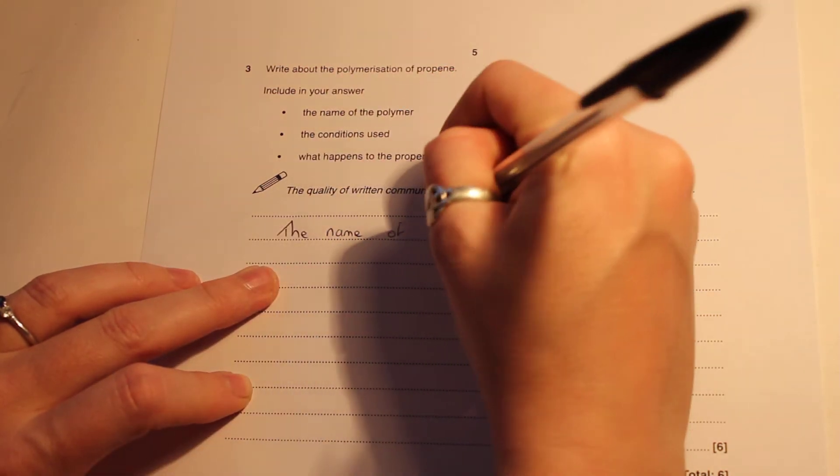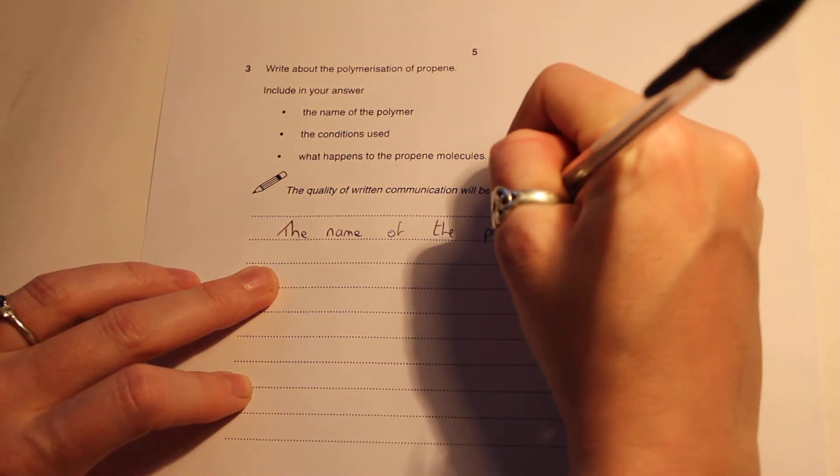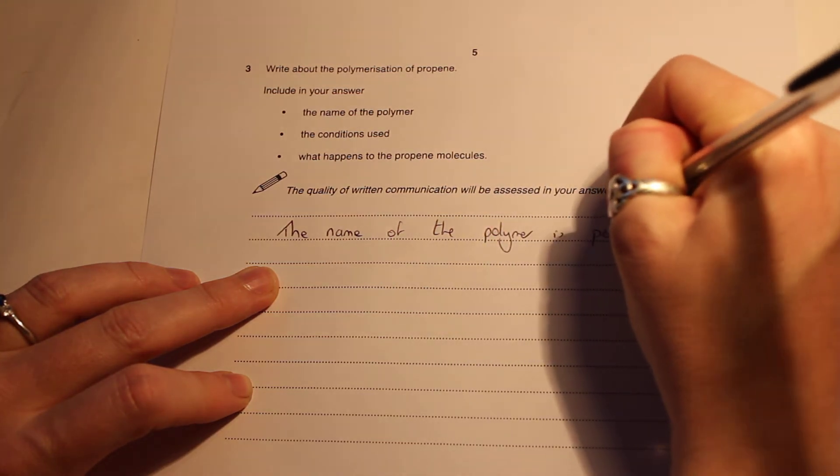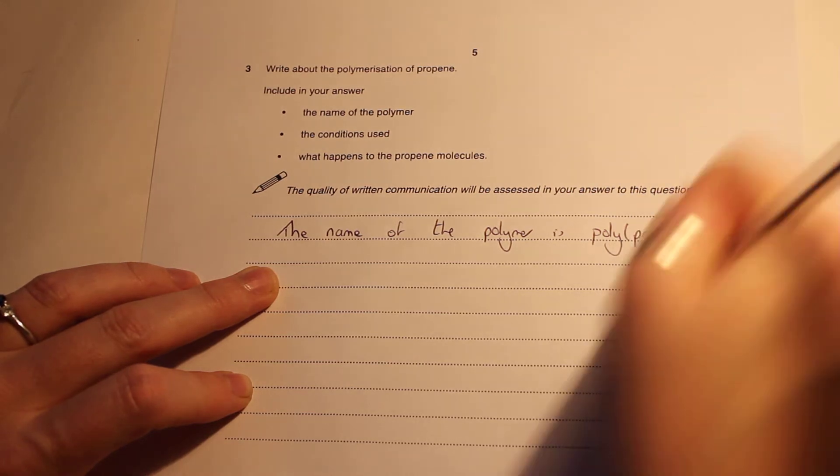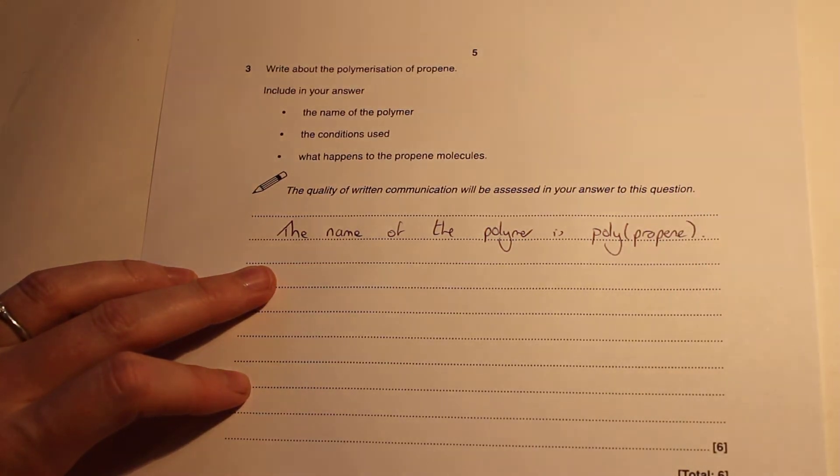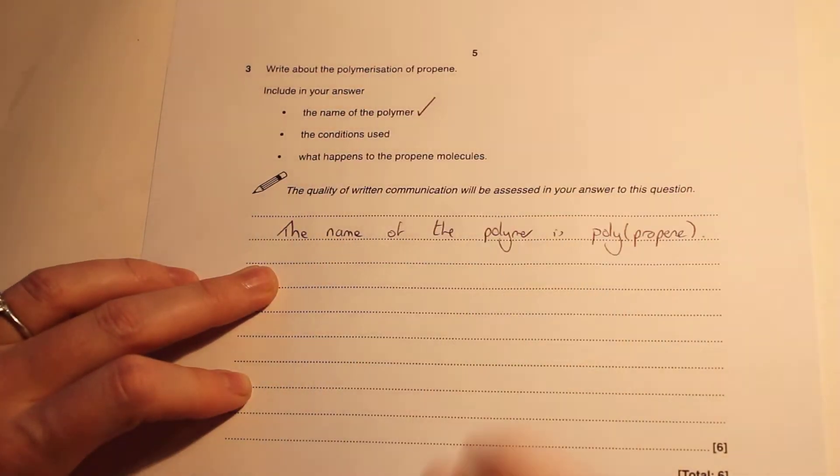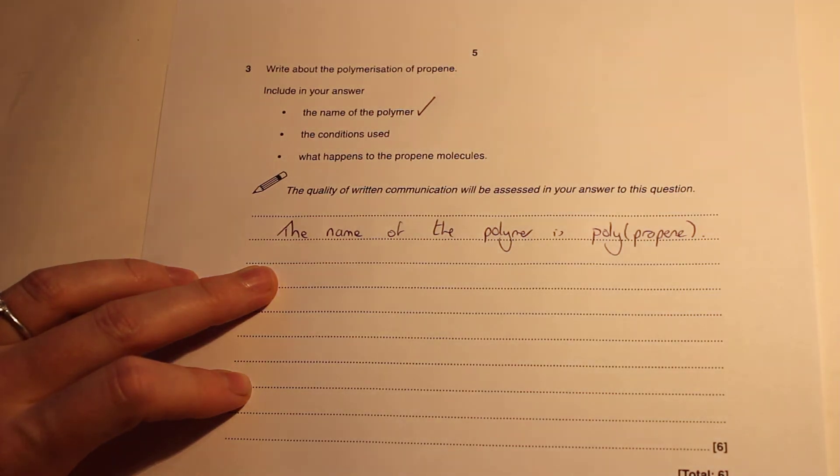So the name of the polymer is polypropene. That's our first point. Done that, tick it off. This is good practice because it means you're not going to miss out part of the question by accident.